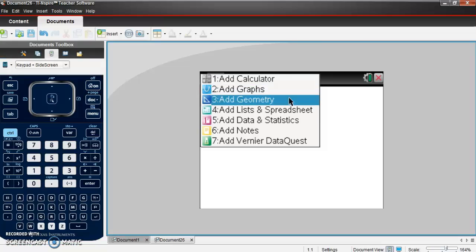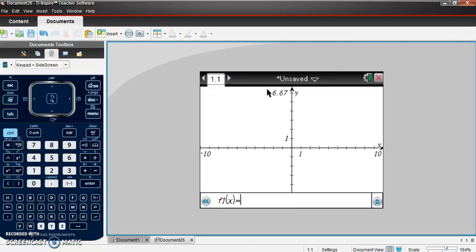I'm going to add in a new document with a graph page, and I'm going to enter that in, hit enter. So there's the first function, right? All good. I hit tab, and then I enter in my next one.